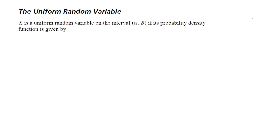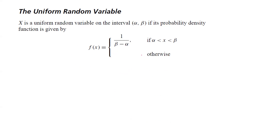For continuous random variables, let us discuss the uniform random variable. X is a uniform random variable on the interval alpha to beta if its probability density function is given as f of x equals 1 over beta minus alpha, if x is bounded between alpha and beta; otherwise, it is 0.